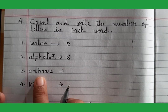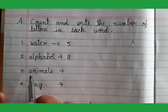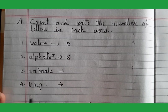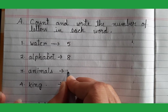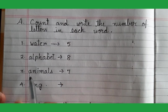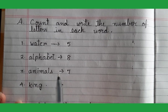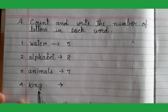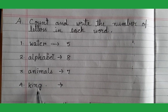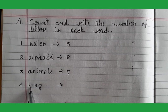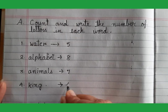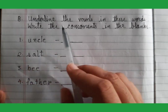Next is 'animals.' In the word 'animals,' how many letters are there? One, two, three, four, five, six, seven — seven letters. One, two, three, four, five, six, seven — seven letters are there in the word 'animals.' Now next word is 'king' — K-I-N-G. How many letters? One, two, three, four — four letters. Next, Exercise B: underline the vowels in these words and write the consonants in the blank.